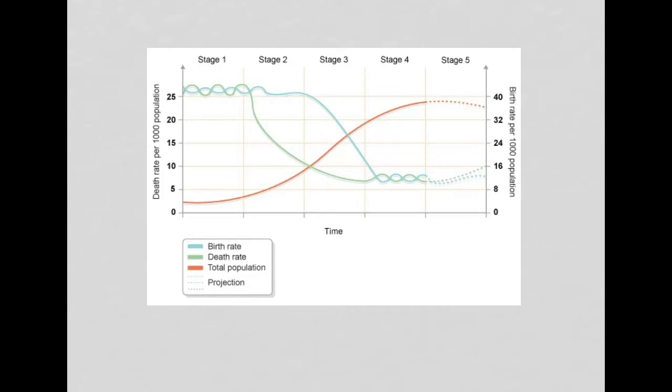So stage one is this first stage on the left hand side. There are a couple of lines that we need to take account for on this graph. We've got our blue line, which represents birth rate. We've got a green line, which represents death rate. And we've also got this total population line in orange. The key thing that you need to understand is that as we move along this time axis along the bottom, countries become more developed.